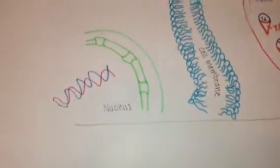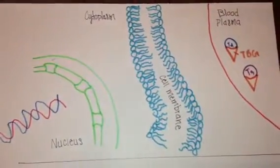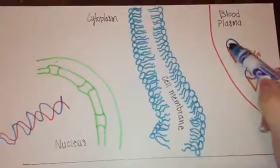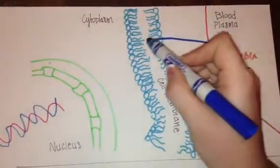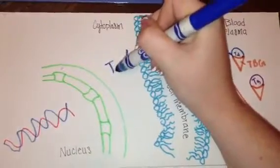When they get to their target cell, T4 easily passes through the cell membrane. It contains four iodine atoms, while T3 only contains three.